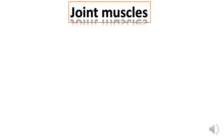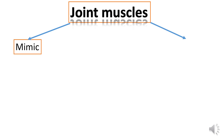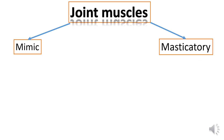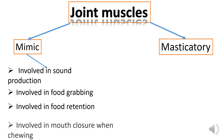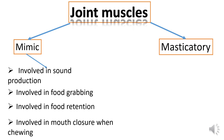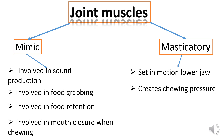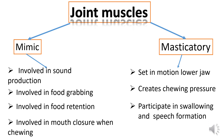Muscles of the temporomandibular joint. The muscles involved in the movement of the joint are divided into mimic muscles, which are located directly under the skin and are not covered with fascia, and masticatory muscles. Mimic muscles are involved in saliva production, food grabbing, food retention, and mouth closure when chewing. Masticatory muscles move the mandible. When these muscles contract, a chewing pressure develops, which ensures the ability of the teeth to bite and grind the food. These muscles also take part in the acts of swallowing and speech formation.